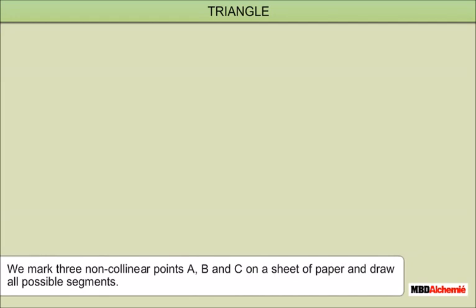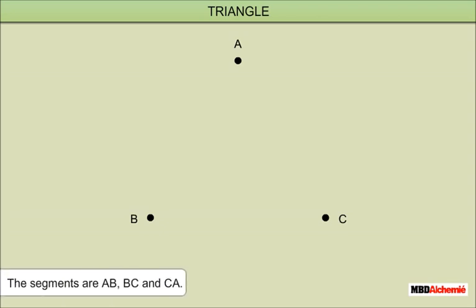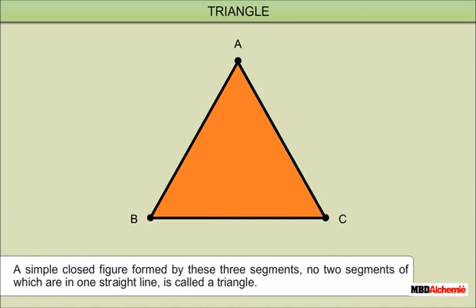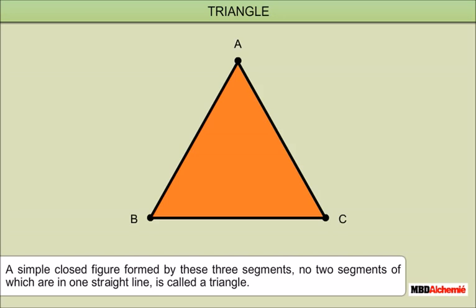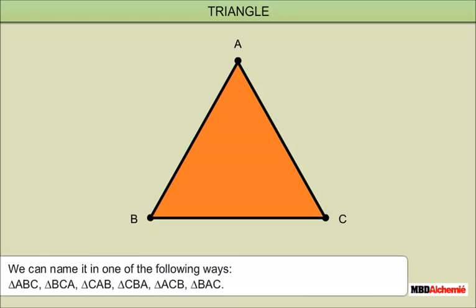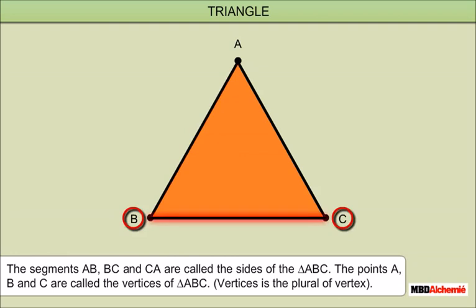Triangle: we mark three non-collinear points A, B and C on a sheet of paper and draw all possible segments. The segments are AB, BC and CA. A simple closed figure formed by these three segments, no two segments of which are in a straight line, is called a triangle. We can name it in one of the following ways: Triangle ABC, Triangle BCA, Triangle CAB, Triangle CBA, Triangle ACB or Triangle BAC. The segments AB, BC and CA are called the sides of the triangle ABC.